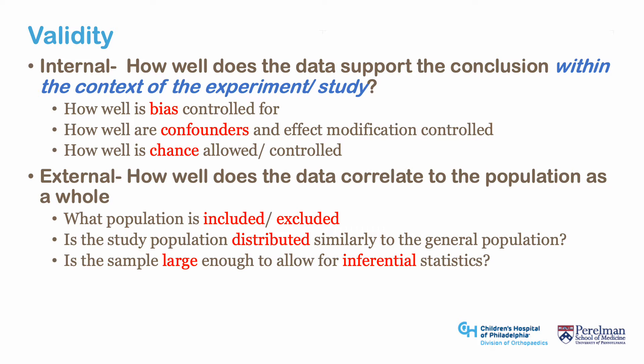In research, validity is typically broken down into internal versus external validity. Internal validity is effectively the same question within the context of the research study — that is, how well do the data support the conclusion within the context of the experiment, i.e., how well does a study measure what it's supposed to measure? Many things go into this, but most have to do with bias, confounding, and chance.